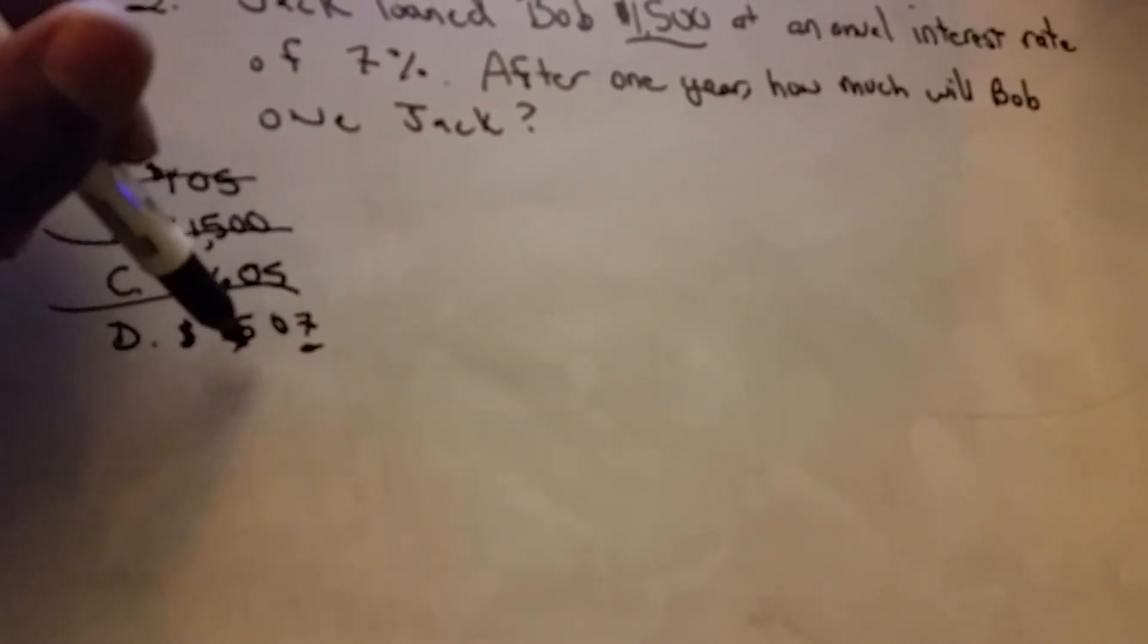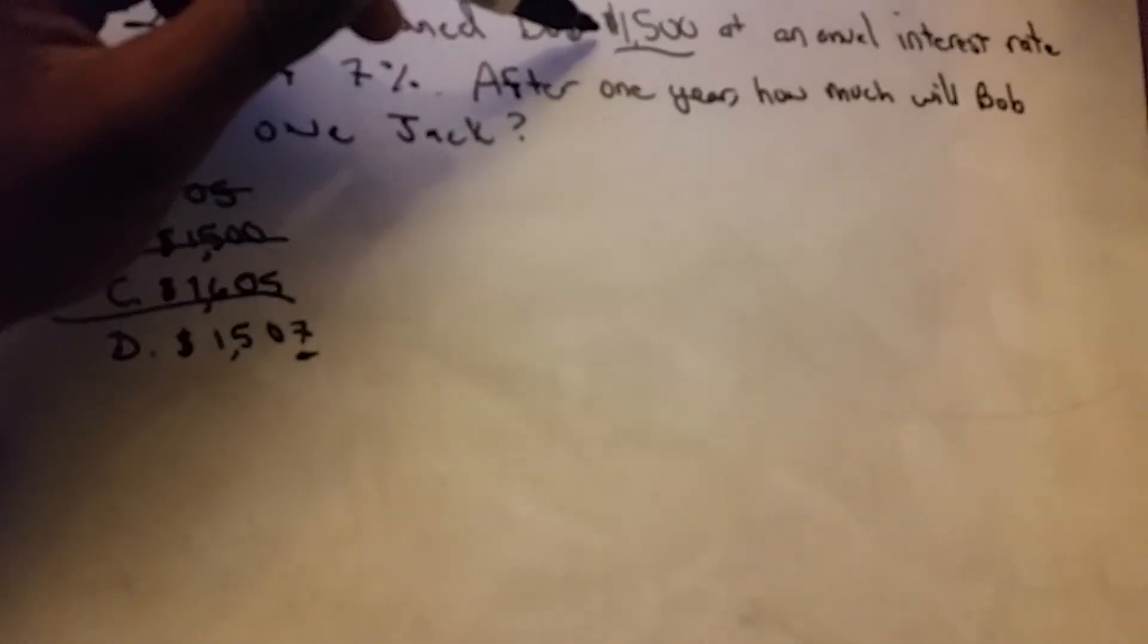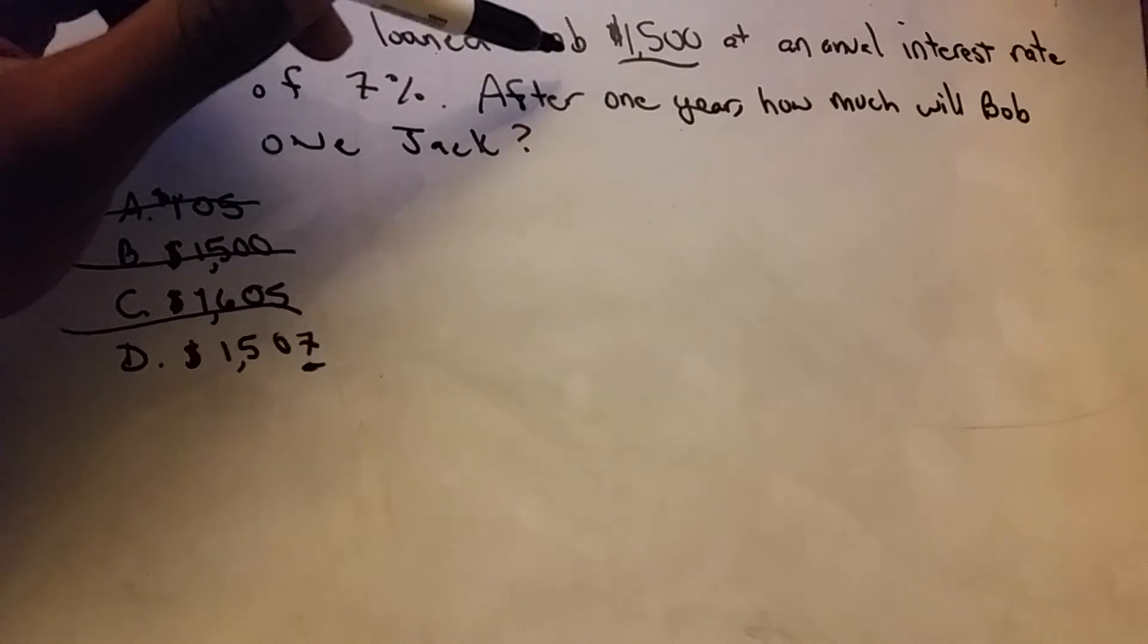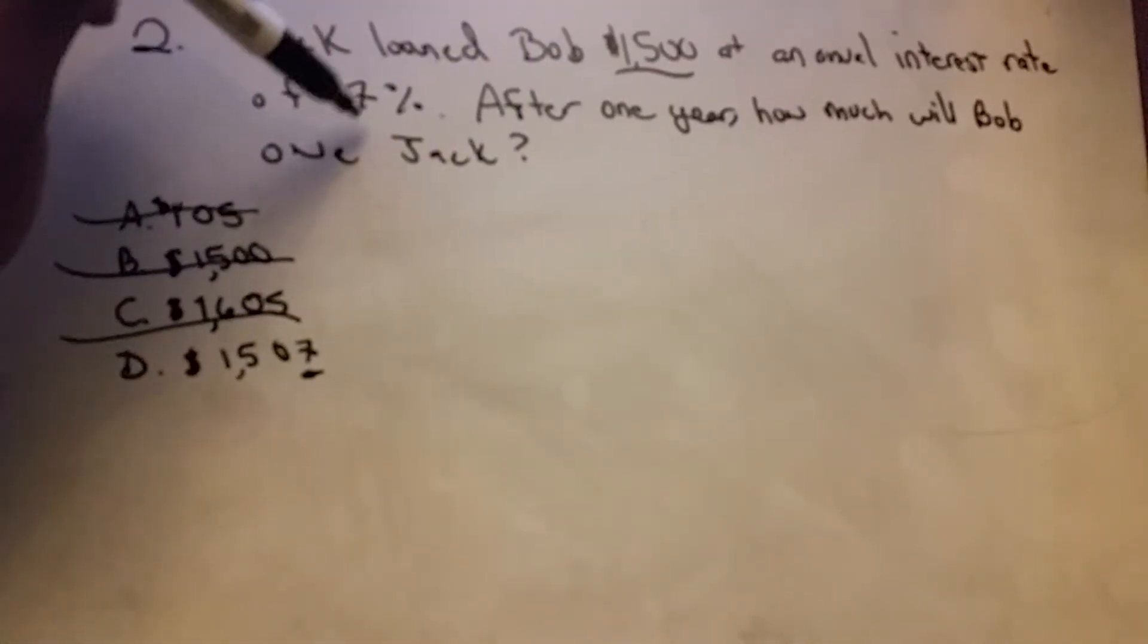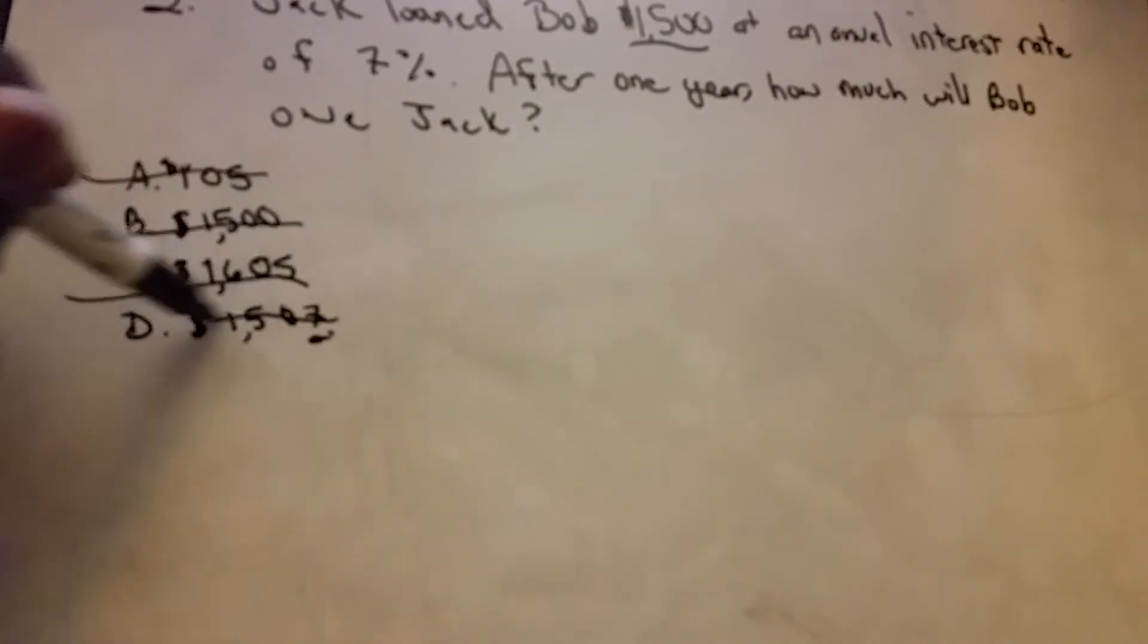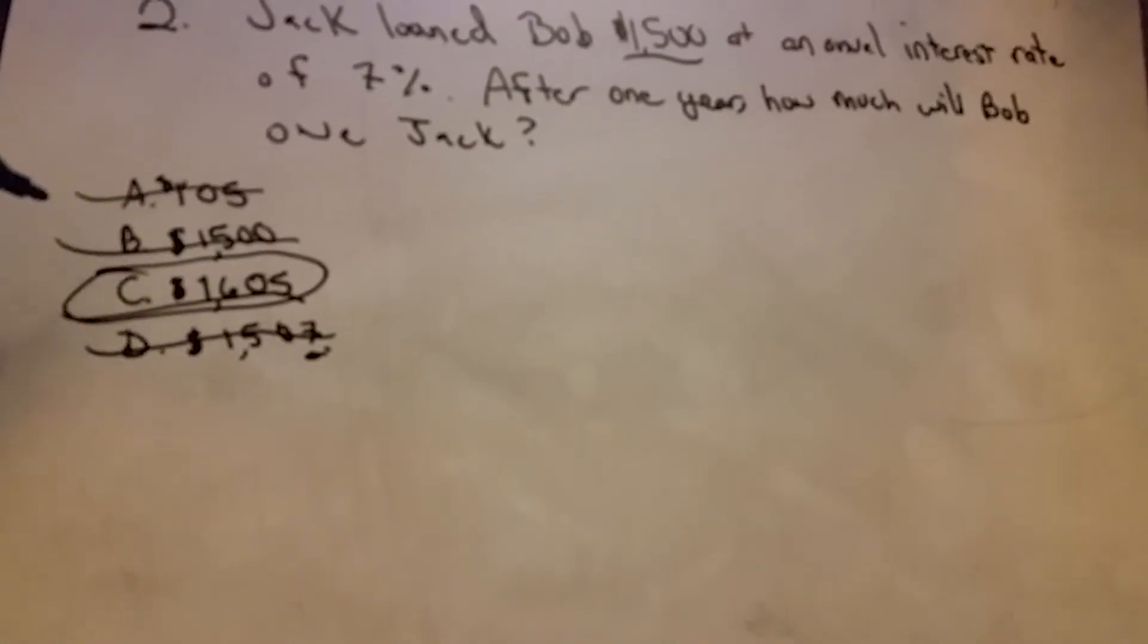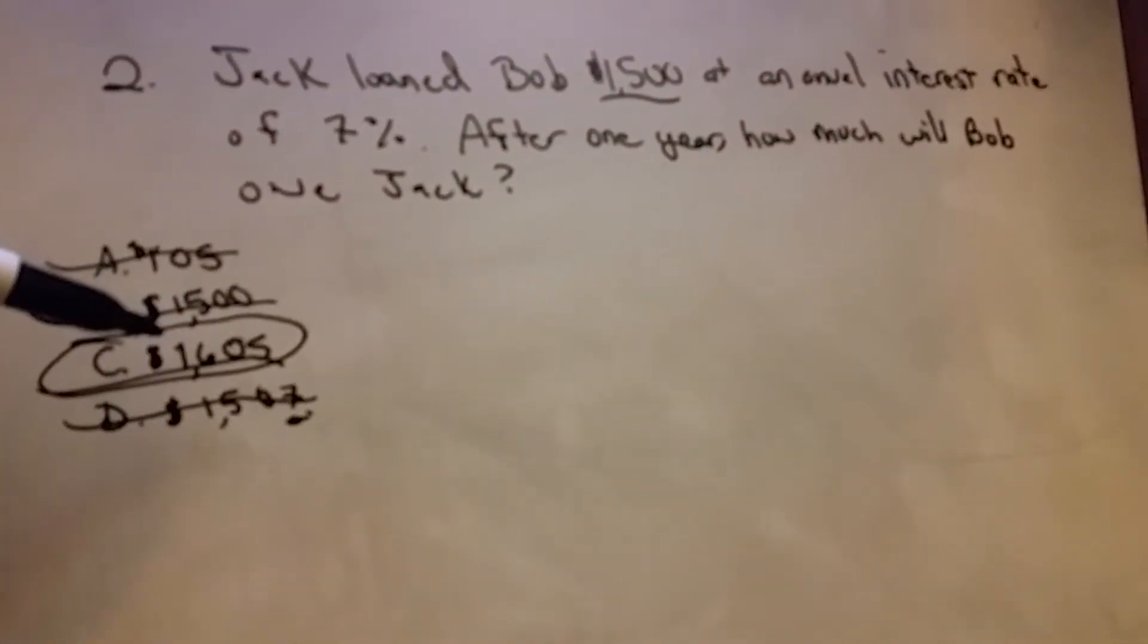That would be an extra $7, but since the loan is for a lot more than that—it's for $1,500, not just $100—the 7% of that would have to be more than $7. So I know it's not D either. That's why I'm saying I know that the answer is C already, but I'll show you the math to figure out how to do that.